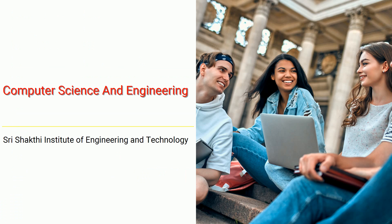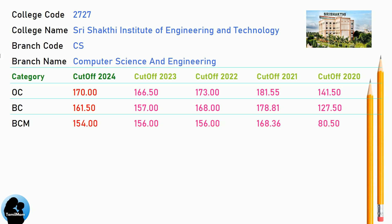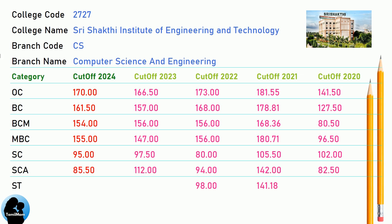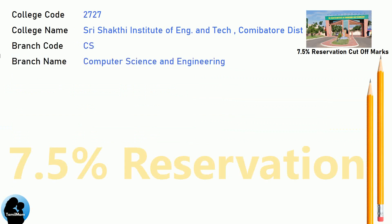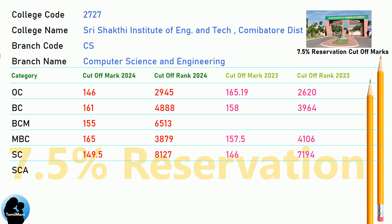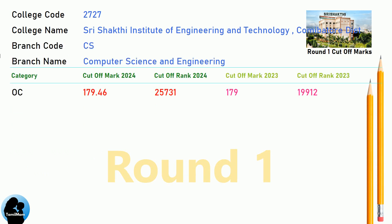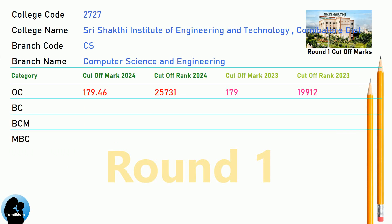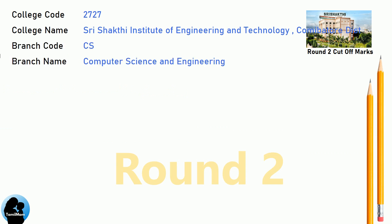DNA Cut-Off for Shri Shakti Institute of Engineering and Technology in Computer Science and Engineering. DNA 7.5 Reservation Cut-Off for Shri Shakti Institute of Engineering and Technology in Computer Science and Engineering. DNA Round 1 Cut-Off and Round 2 Cut-Off for Shri Shakti Institute of Engineering and Technology in Computer Science and Engineering.